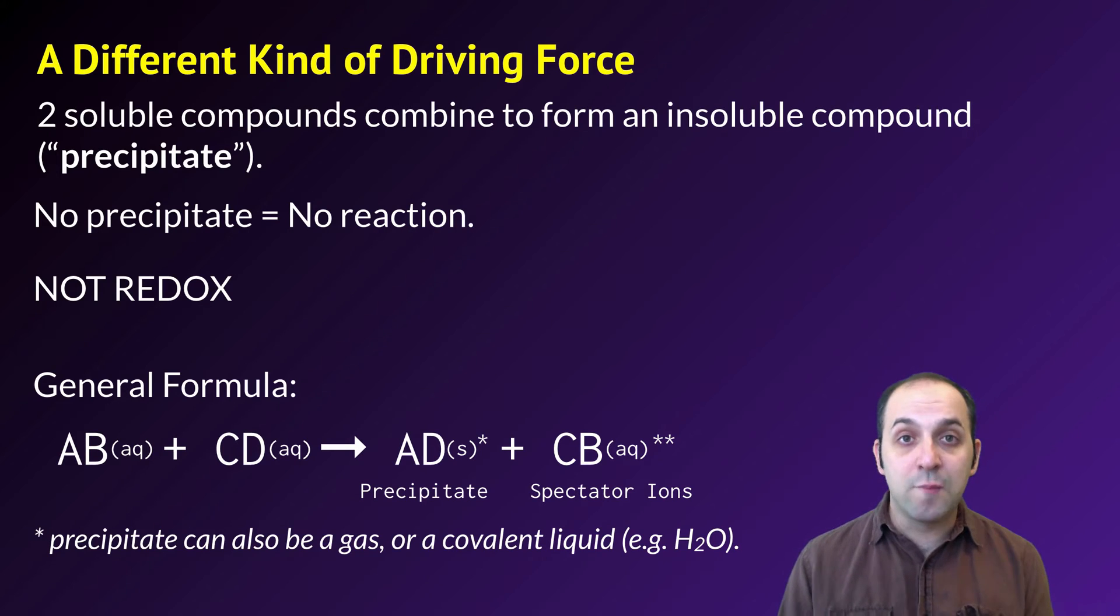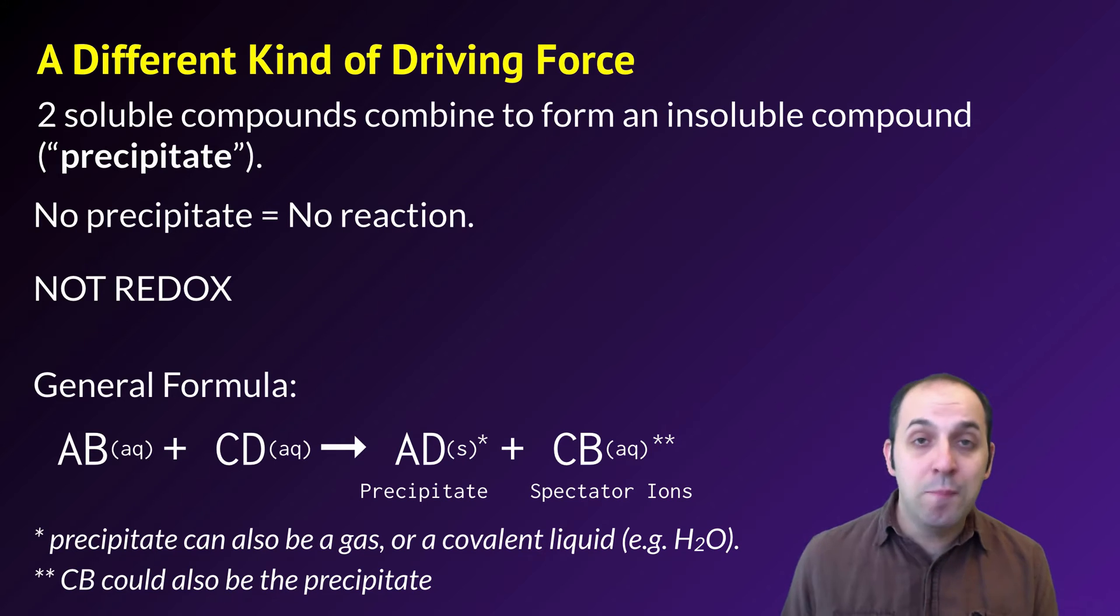We should also note that the precipitate can also be a gas or a liquid, something like water, which is somewhat hard to see when these things are occurring in a water-based solution. And keep in mind that the precipitate could be CB if CB were insoluble, in which case AD would be the spectator ions.